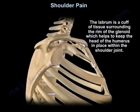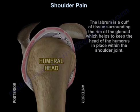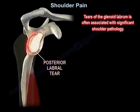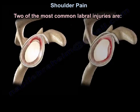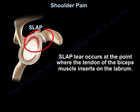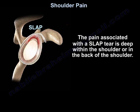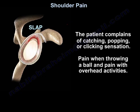The labrum is a cuff of tissue surrounding the rim of the glenoid, which helps to keep the head of the humerus in place within the shoulder joint. Tears of the labrum are often associated with significant shoulder pathology. Two of the most common types of labral injuries are the SLAP tear and the Bankart lesion. The SLAP tear is not common and it is difficult to diagnose. It occurs at the point where the tendon of the biceps muscle inserts on the labrum. The pain is deep within the shoulder or in the back of the shoulder. The patient complains of catching, popping, or clicking sensation, pain when throwing a ball, and pain with overhead activities.